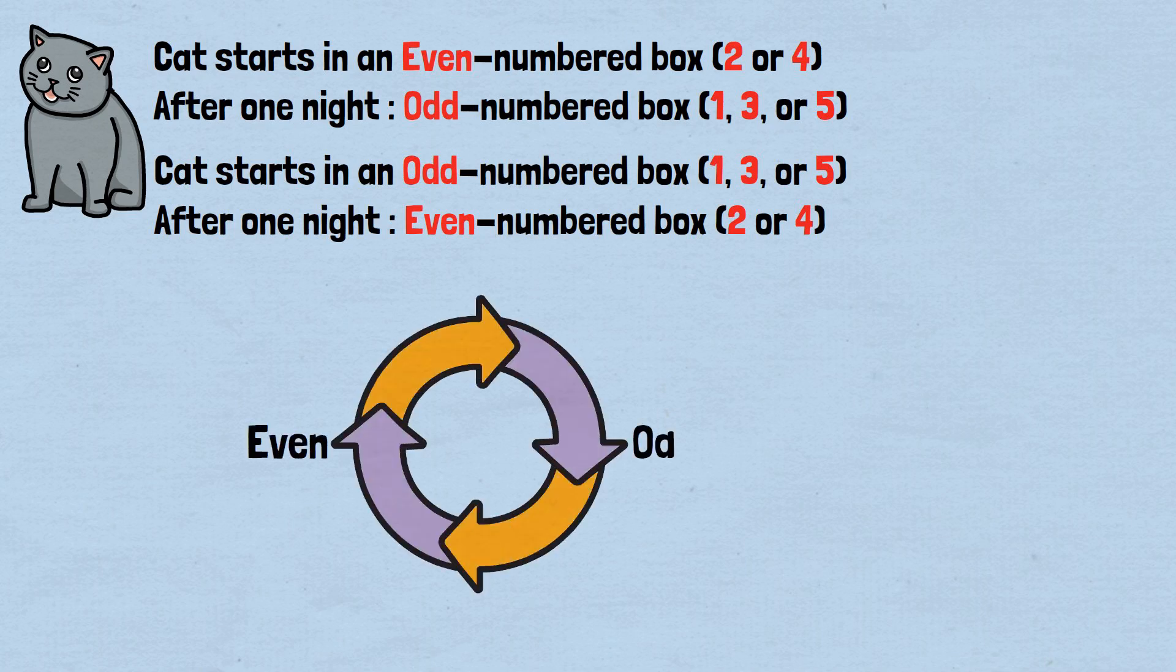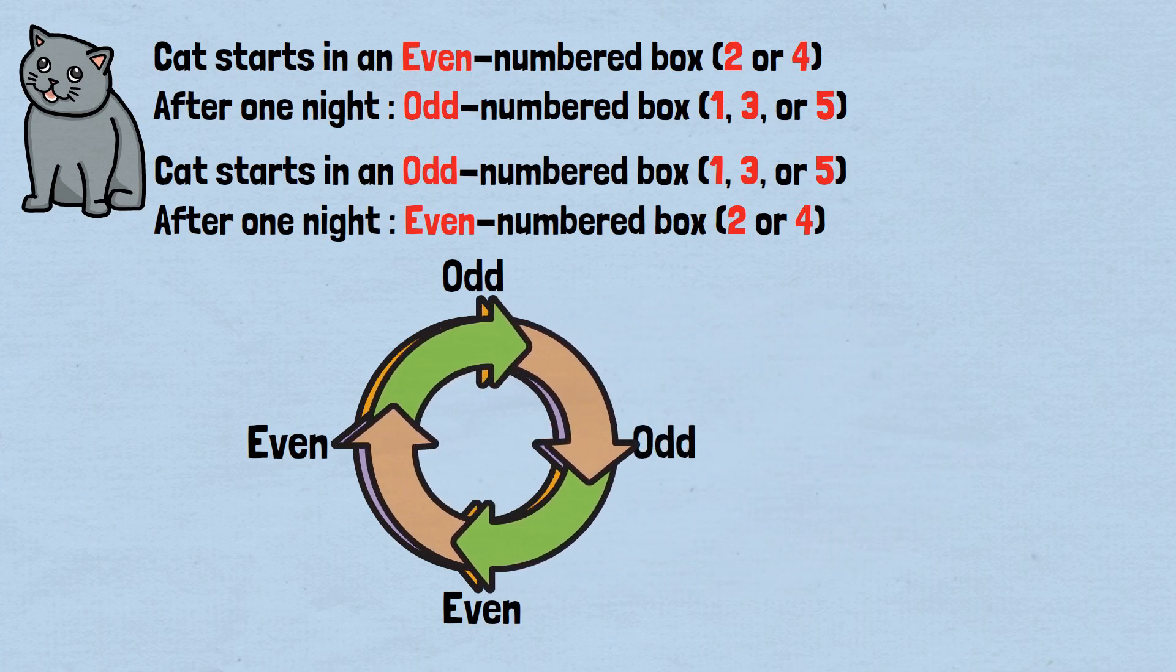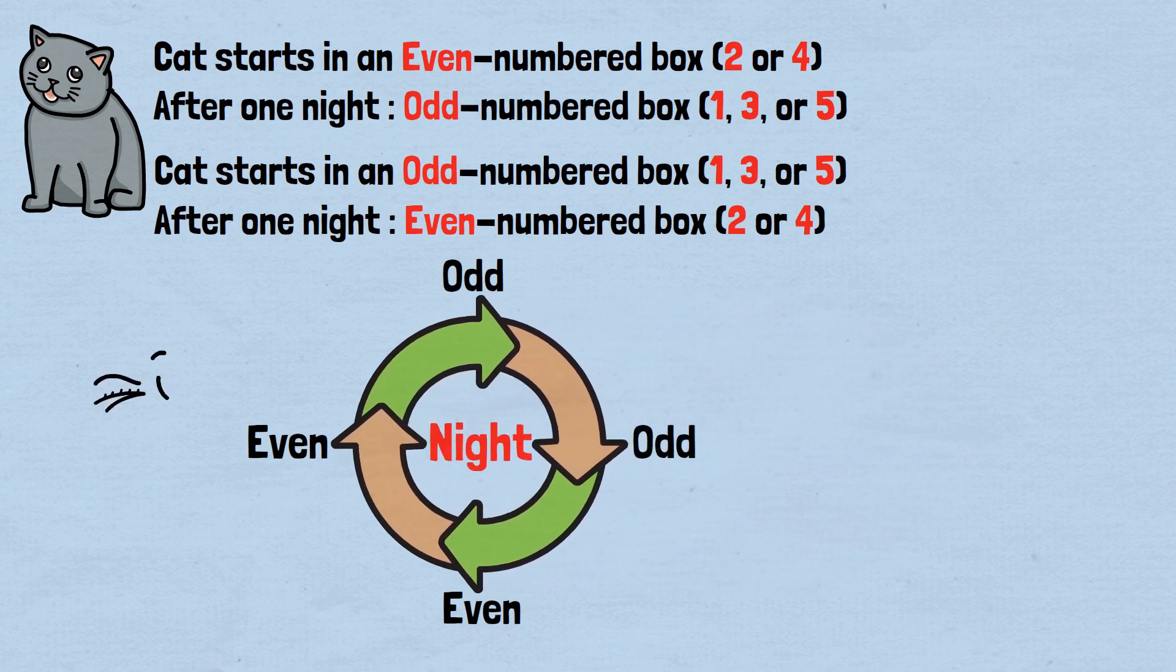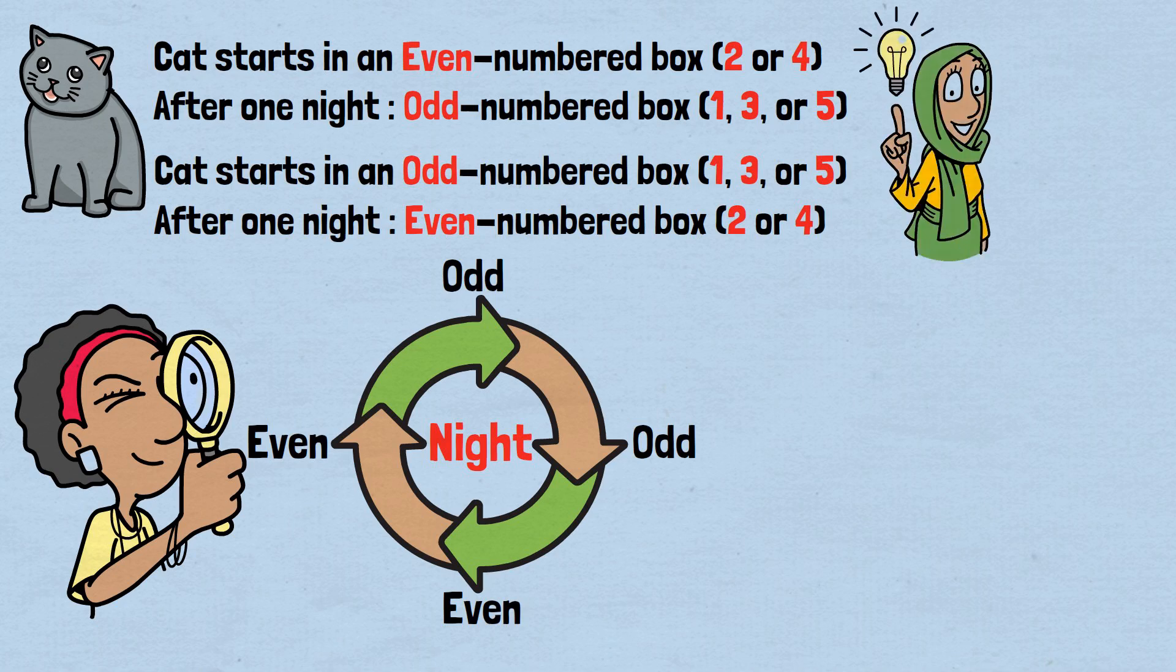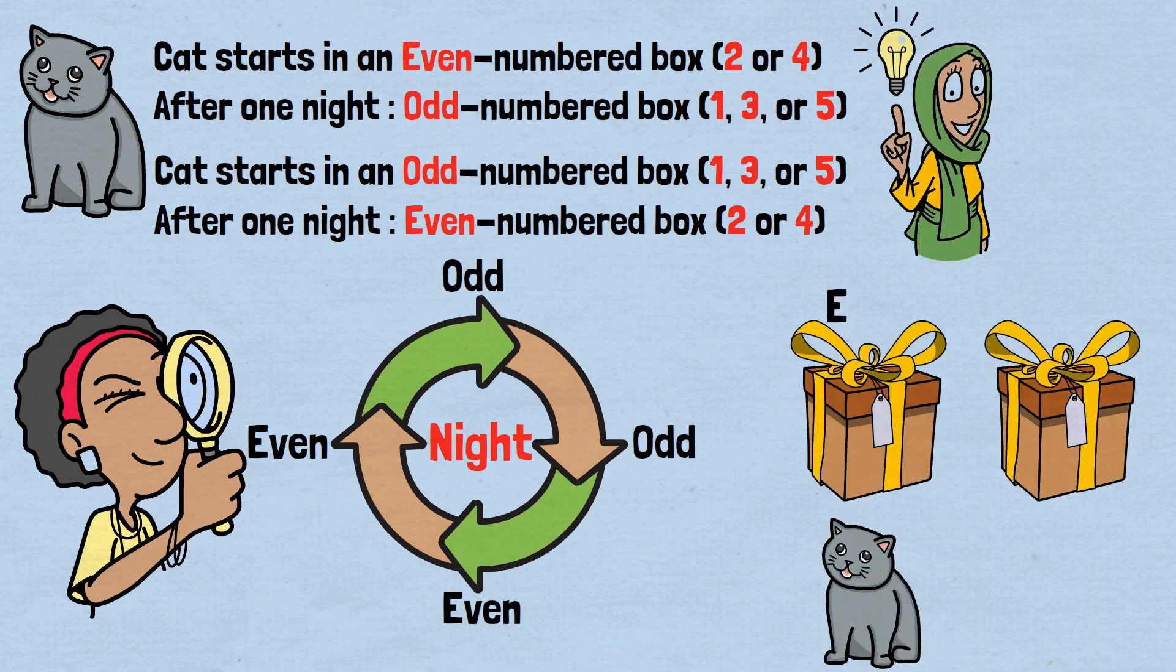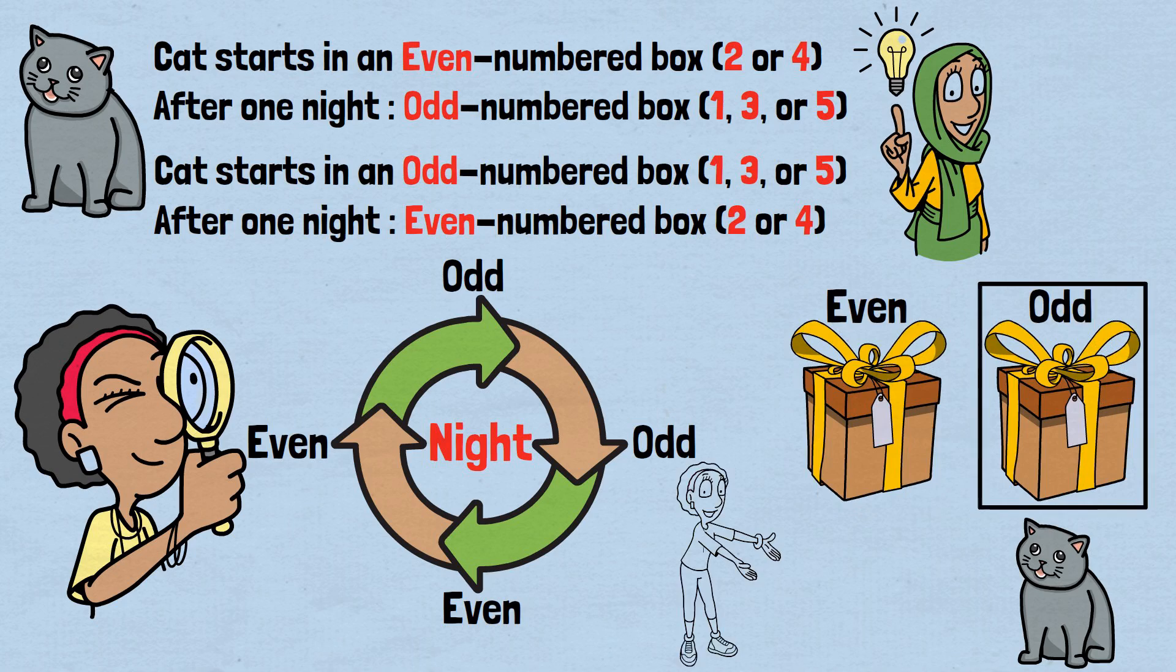This alternating pattern, even to odd, odd to even, continues indefinitely. The cat's parity, even or odd position, alternates every single night. If we can synchronize our search pattern with the cat's parity pattern, we can guarantee success. We need to search in such a way that when the cat is in an even-numbered box, we're also searching even-numbered boxes. When the cat is in an odd-numbered box, we're searching odd-numbered boxes. But there's a subtle complexity here that makes this puzzle truly elegant. We don't know whether the cat started in an even or odd position. Our strategy must account for both possibilities.